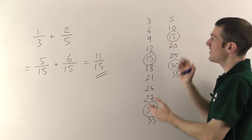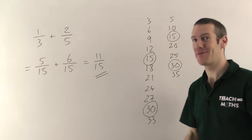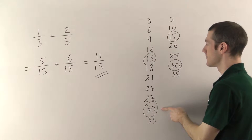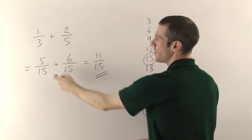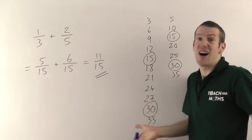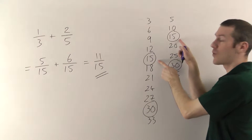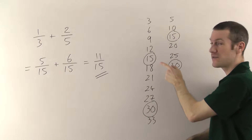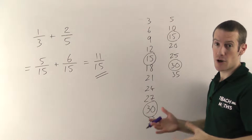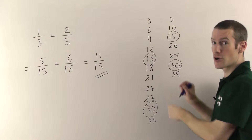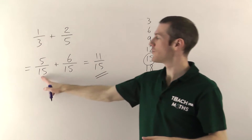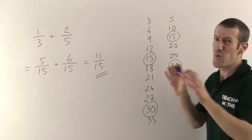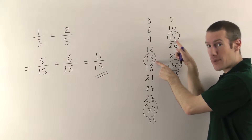Why do we pick the smallest? Basically we're just lazy — we want to make life as easy as possible for ourselves. You could use 30 on the bottom; 3 and 5 both divide into 30, so it would work. But if you put 30s on the bottom, the numbers are bigger and harder to deal with. So we go with the smallest. This number — the smallest in both times tables, in this case 15 — is called the lowest common denominator or lowest common multiple. Lowest because it's the smallest, common because it's in both, and denominator because it's the number on the bottom of the fraction.